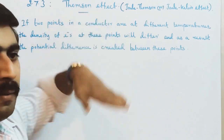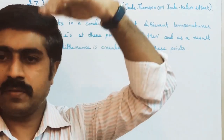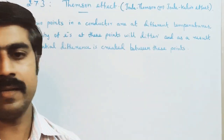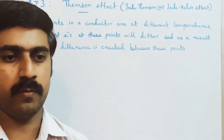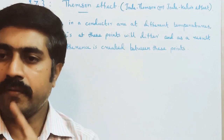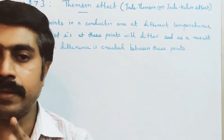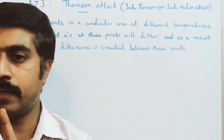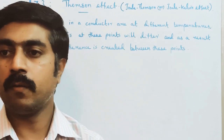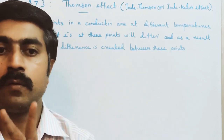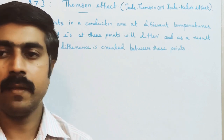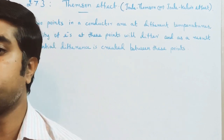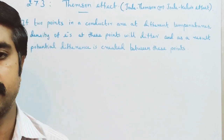So this is the basics. Two dissimilar metals joined to form a thermocouple — meaning they form two junctions. But here, in the Thomson effect, one single metal is considered, not two dissimilar metals.